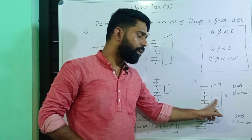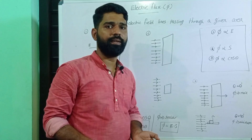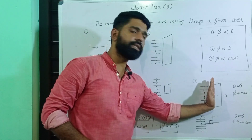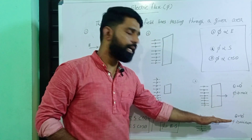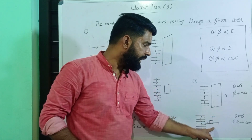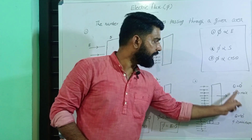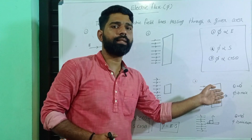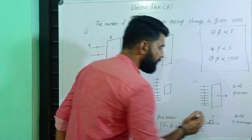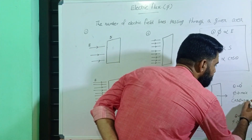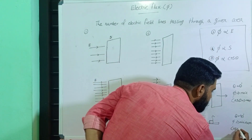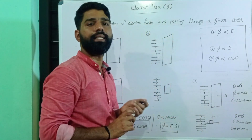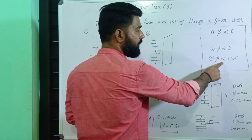So if we have theta equal to 0 degrees we have maximum flux, and if we have theta equal to 90 degrees the electric flux is zero. At theta 0 the flux is maximum; at theta 90 it is minimum. So the flux is directly proportional to cos theta.